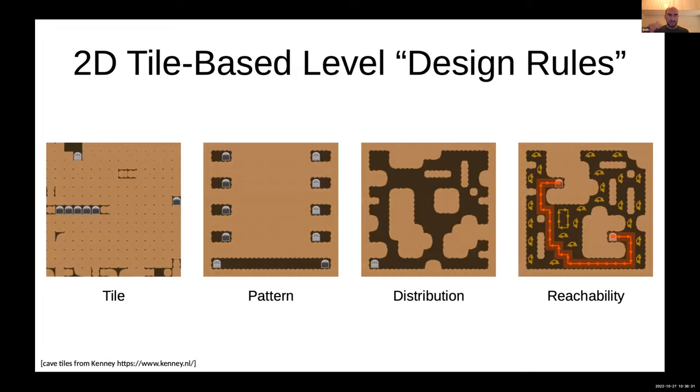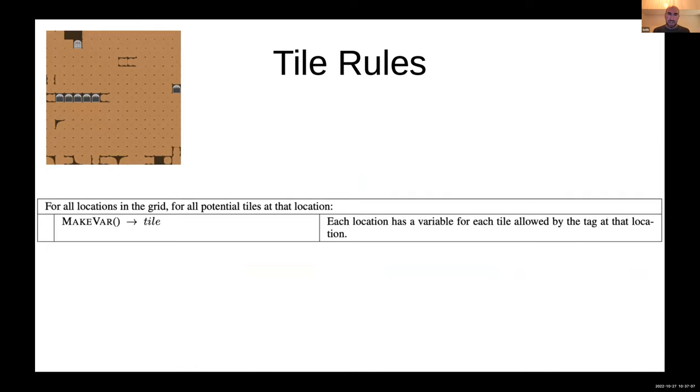Based on this small mid-level API, it's possible to implement some design rules for generating levels procedurally. This is showing them additively from left to right: you want one tile at each location, adding local tile patterns that were learned from example levels, adding a distribution and trying to match the distribution of tiles from an example level, and then adding the constraint that you have a start and a goal and the goal is reachable from the start.